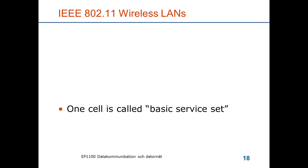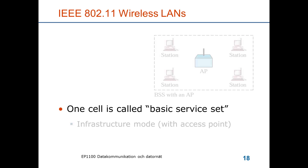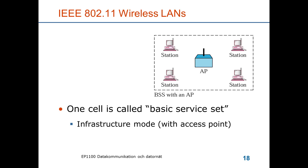Starting with the smallest type of local area network in this wireless standard, we call a cell a basic service set. It can be in infrastructure mode, which means that the computers, or stations as they're called here, are communicating with one another via an access point. This is a star topology, where a station sends data to the access point on the uplink, and the access point sends the data on the downlink reaching the intended station.